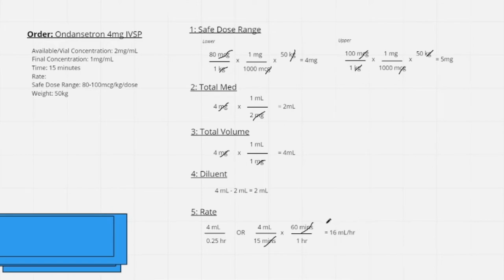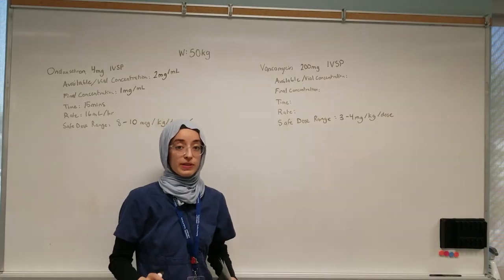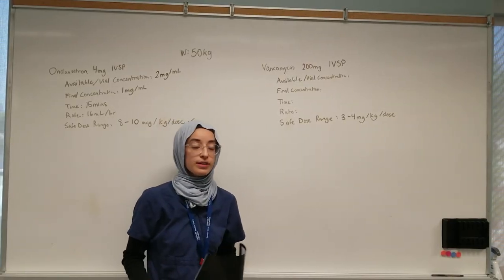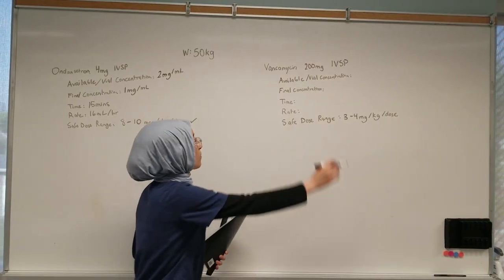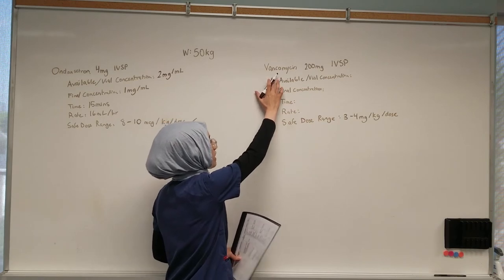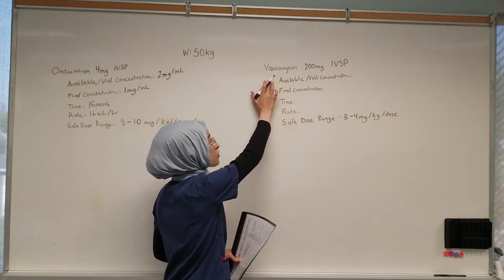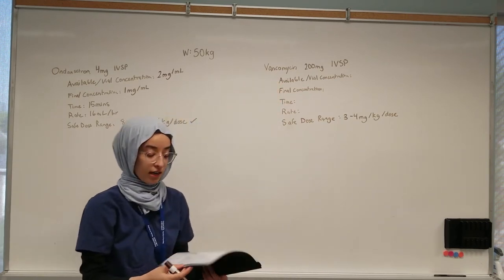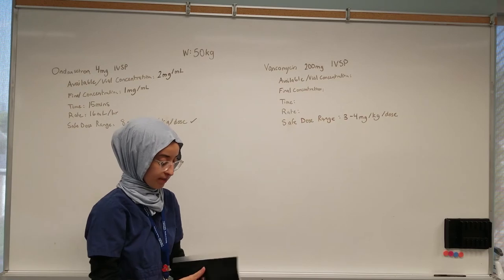We'll remember those numbers — 16 mL/hr — to input into the syringe pump during programming. For the second question, we're going to do a reconstitution. The order is vancomycin 200 milligrams IV syringe pump. We're going to look for it in our IV resource sheet.